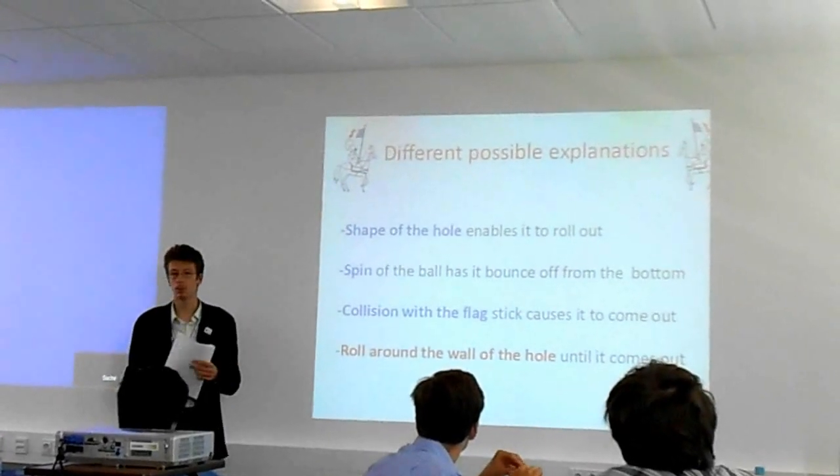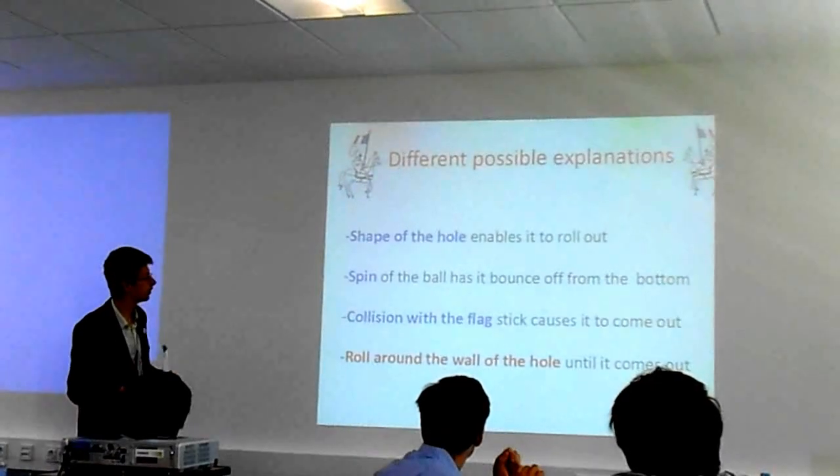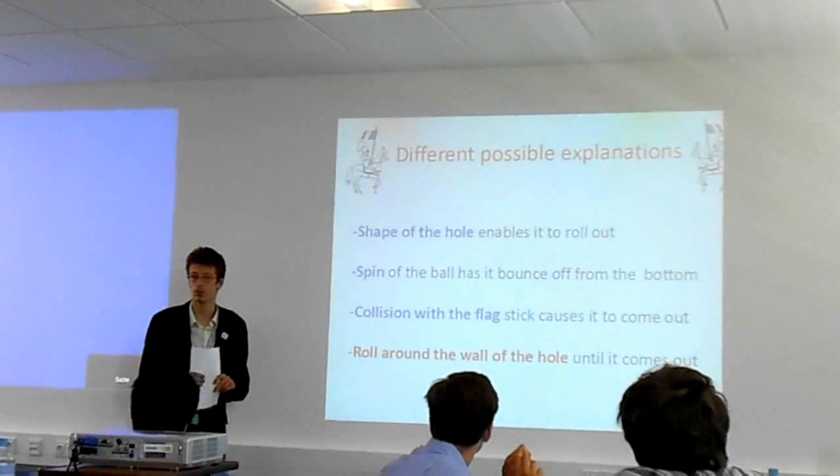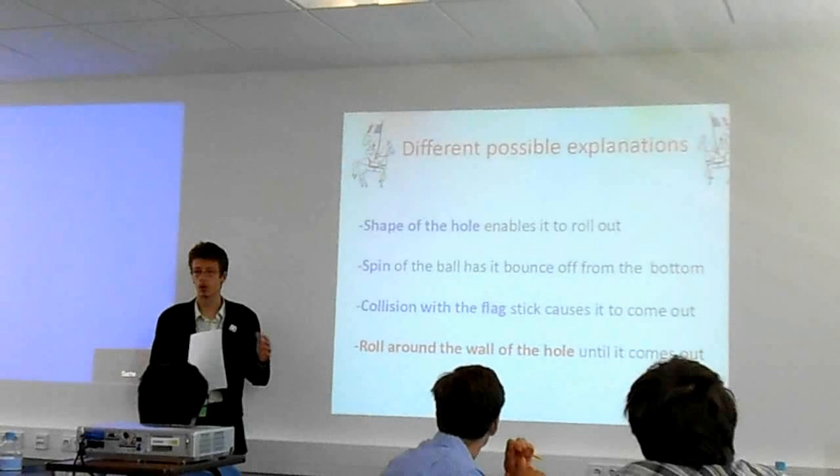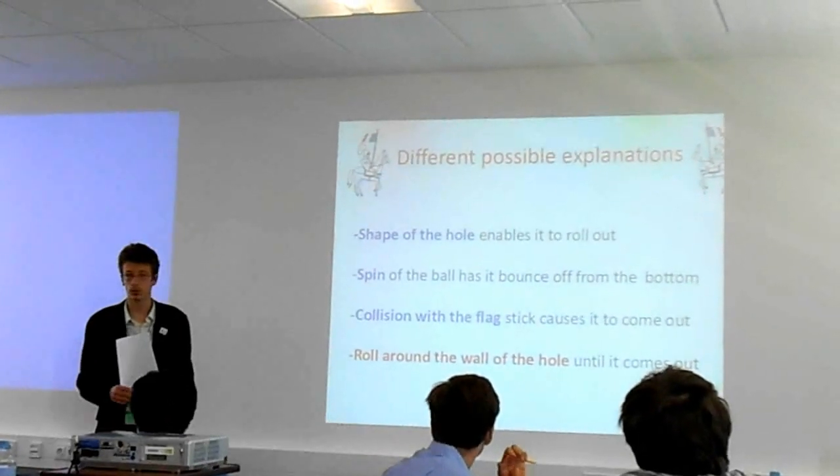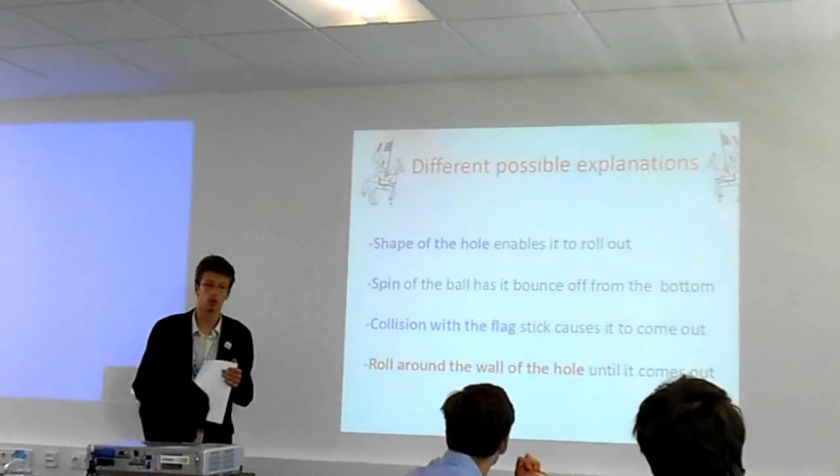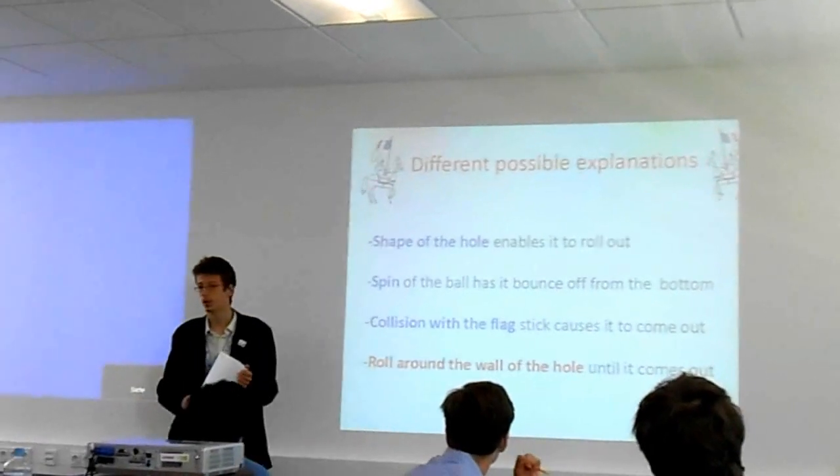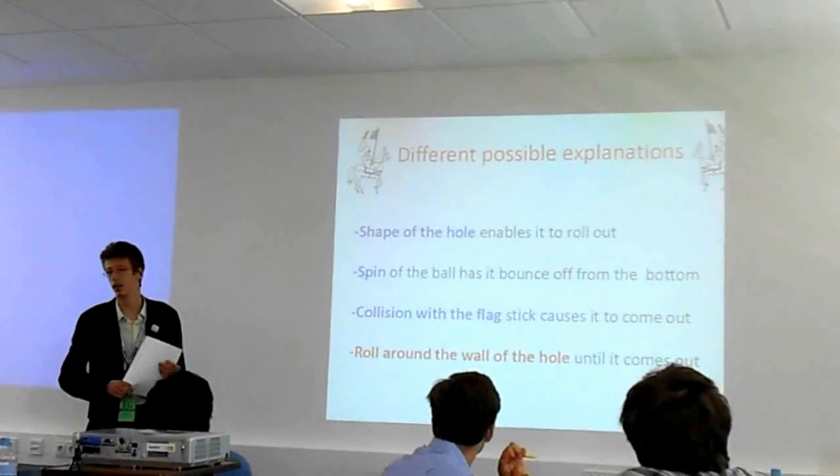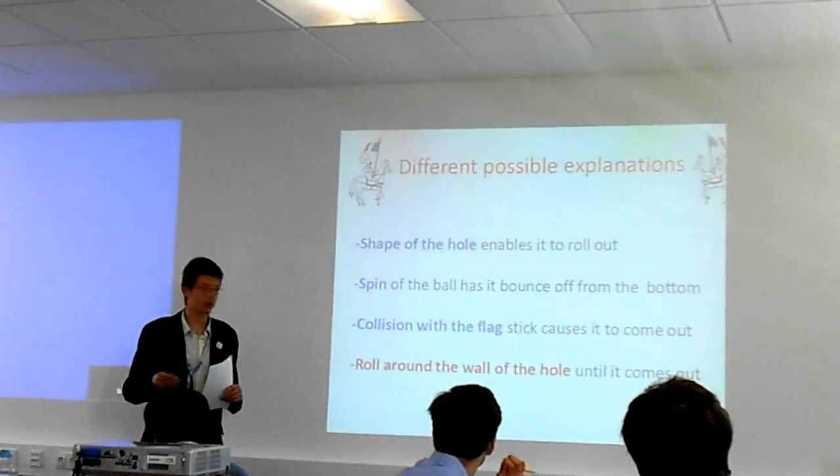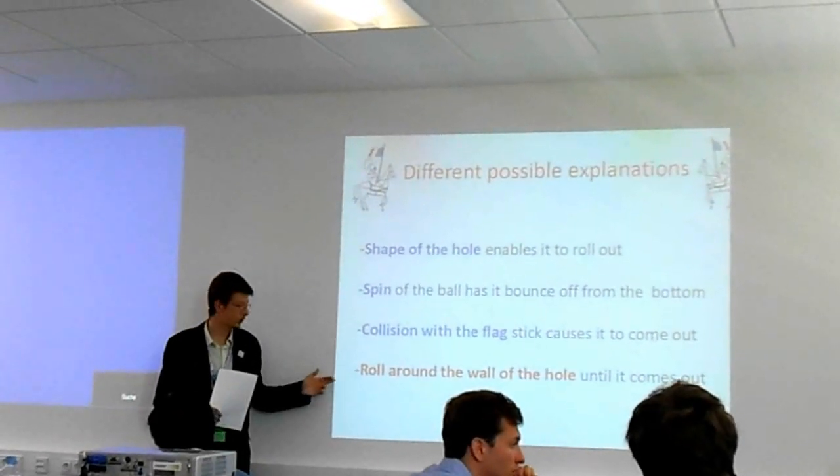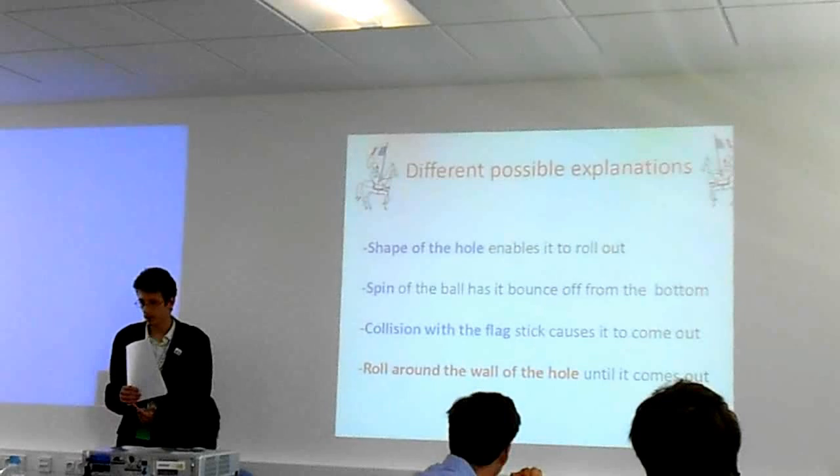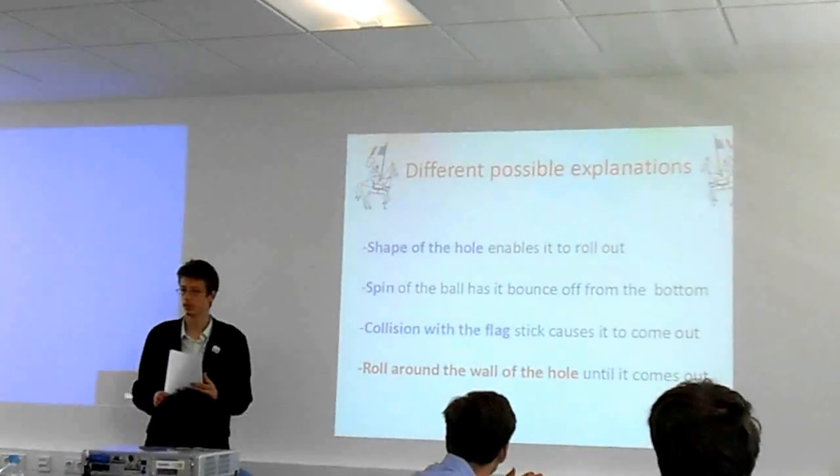The spin can have the ball bounce off, but we're not going to study this because we consider the ball to be experimental with the right spin. The collision with the flag from long shots can have the ball fall down and bounce out again, but we're not going to consider this because the flag differs greatly. We're rather going to concentrate on the last case, when the ball rolls around the hole and comes out this way.